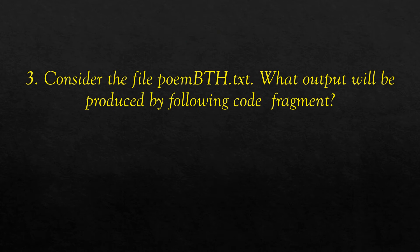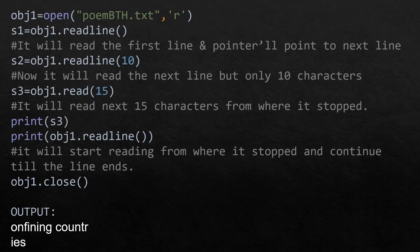The next question considers the same file poem_bth.txt and asks what output will be produced by the following code fragment. The file is opened in read mode and refers to one object obj1. We have called the readline method, storing the output in a variable s1, so s1 stores the first line read from the file. After reading, the pointer moves to the next line.